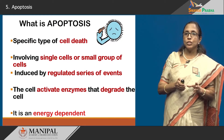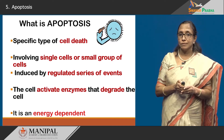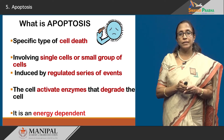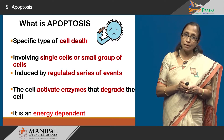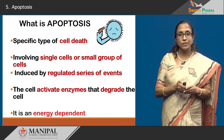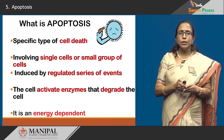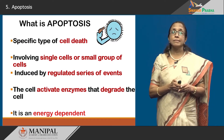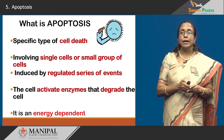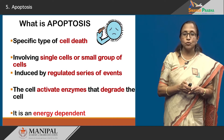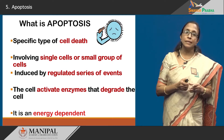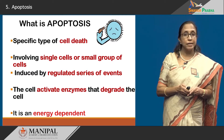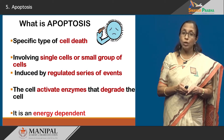To give the definition of apoptosis: it is a specific type of cell death which involves single cells or small groups of cells, induced by a series of regulated events. The cells require enzymes to be activated that degrade and break up the cell, and it is an energy-dependent process.